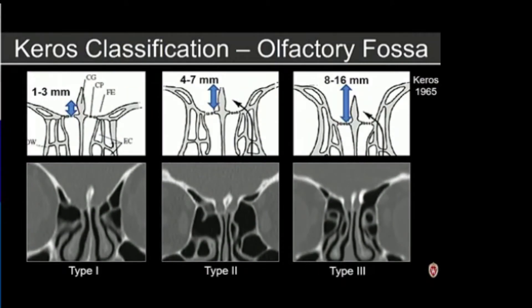Understanding this anatomy is very important, and there is the Keros classification, divided into three types — type one, two, and three — based essentially on the depth of the olfactory fossa. What I find more useful is understanding the relative asymmetry between the right and left sides, which surgeons really find helpful. If the fovea ethmoidalis is more obliquely oriented on one side or one is lower than the opposite side, we will identify that and include it in our reports.